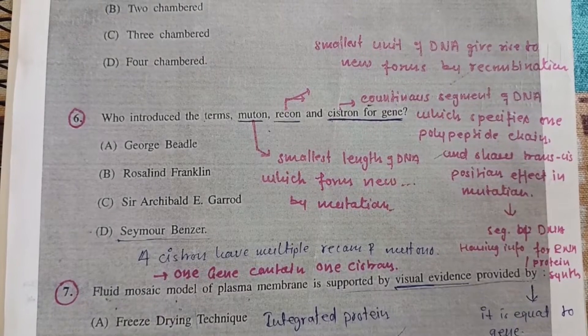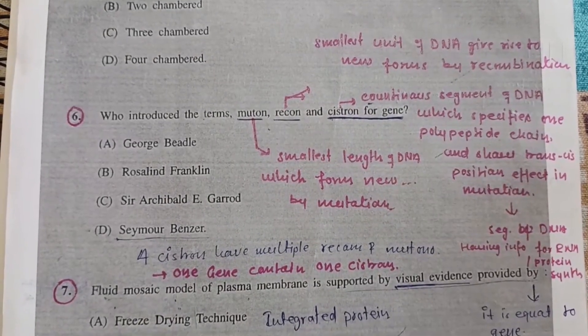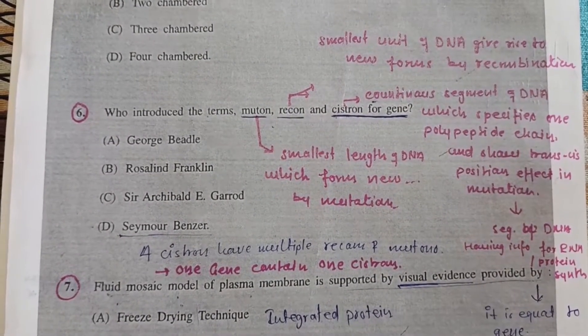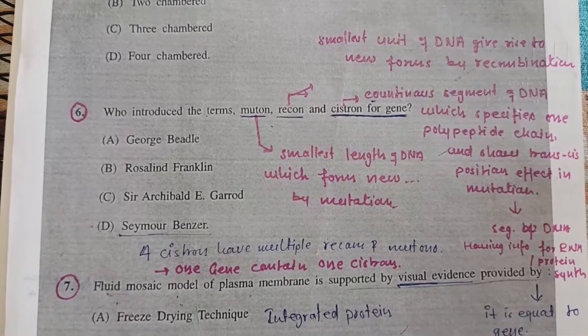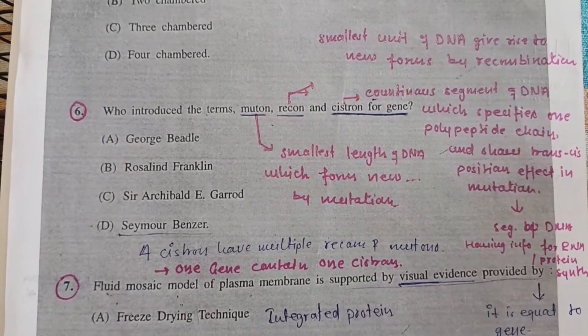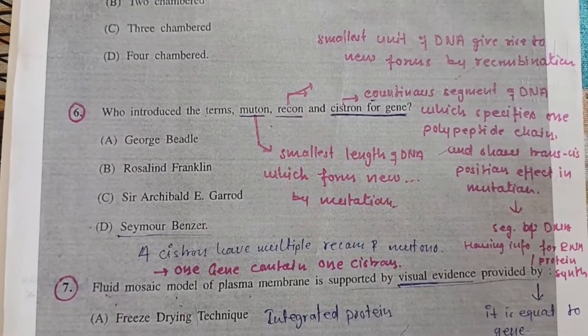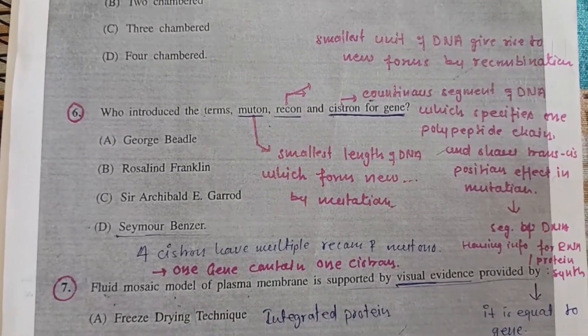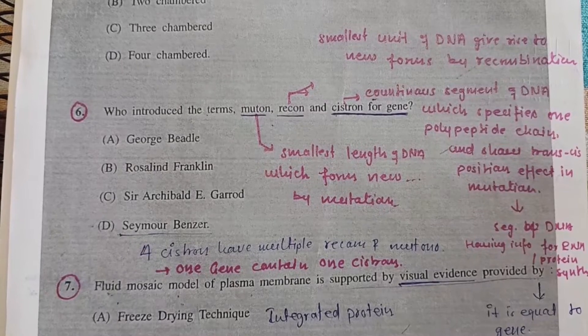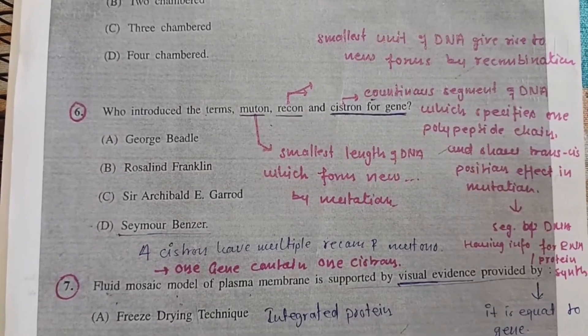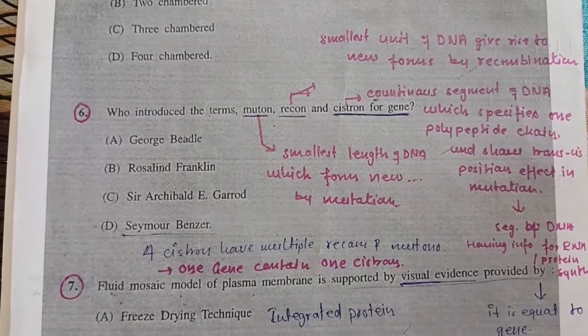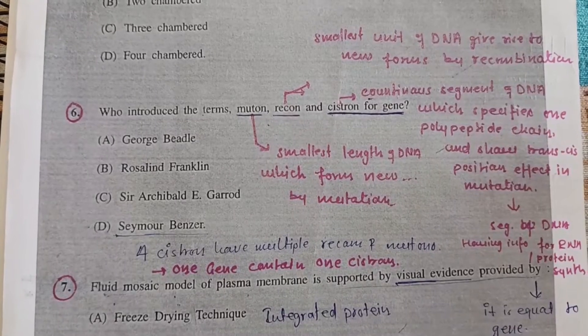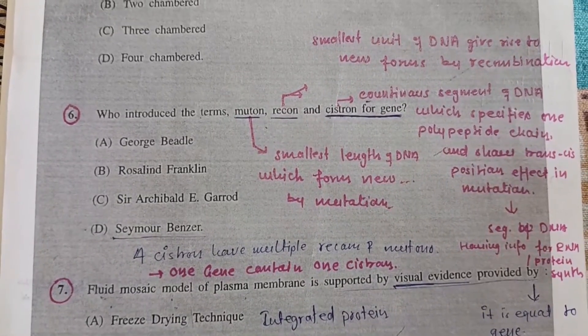Question 6: Who introduced the term muton, recon, and cistron for gene? These three are sequences present in DNA or gene which have specific work. Cistron is a sequence having genetic information required for protein synthesis. Muton is where mutation occurs, and recon is where recombination occurs. The correct answer is option D, Seymour Benzer.